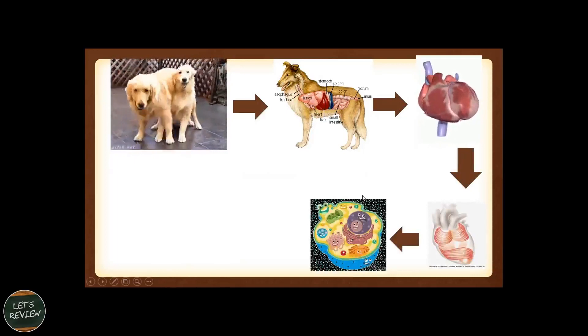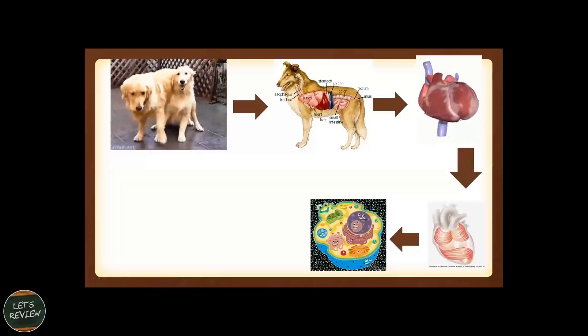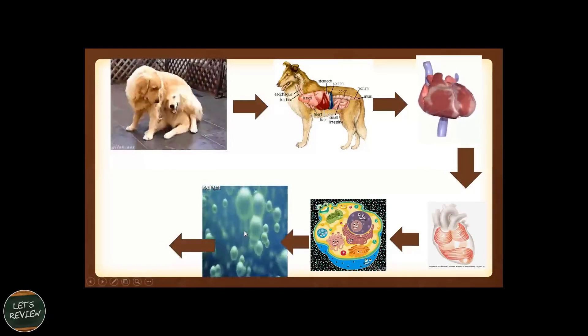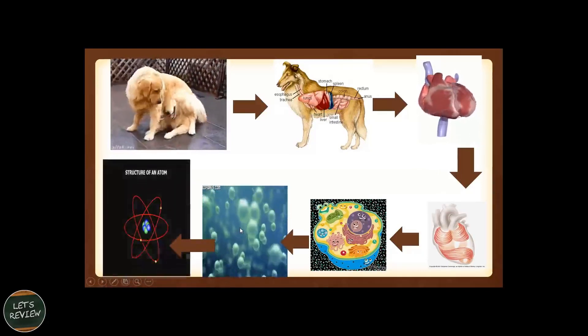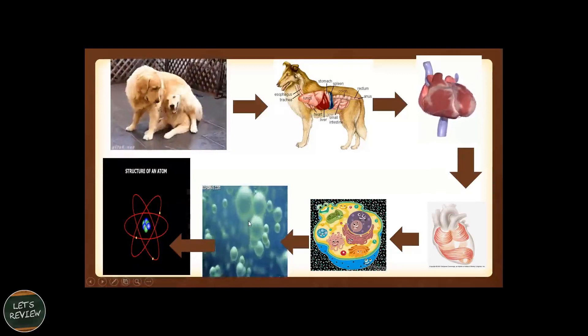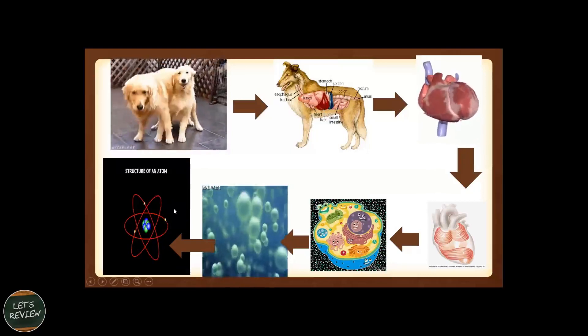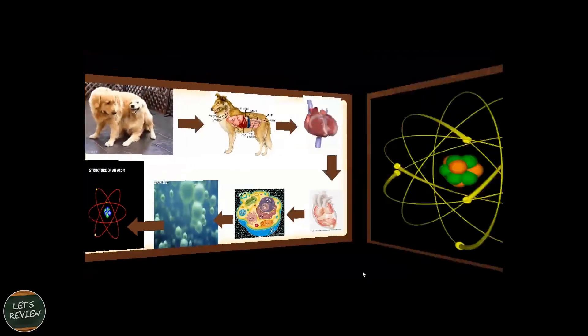Tissue is a group of cells performing their function in the cardiac muscle. Before it becomes a cell, it's a group of molecules. And before it becomes molecules, it all started with the atom. Everything, all matter, starts with an atom, the basic unit of matter.